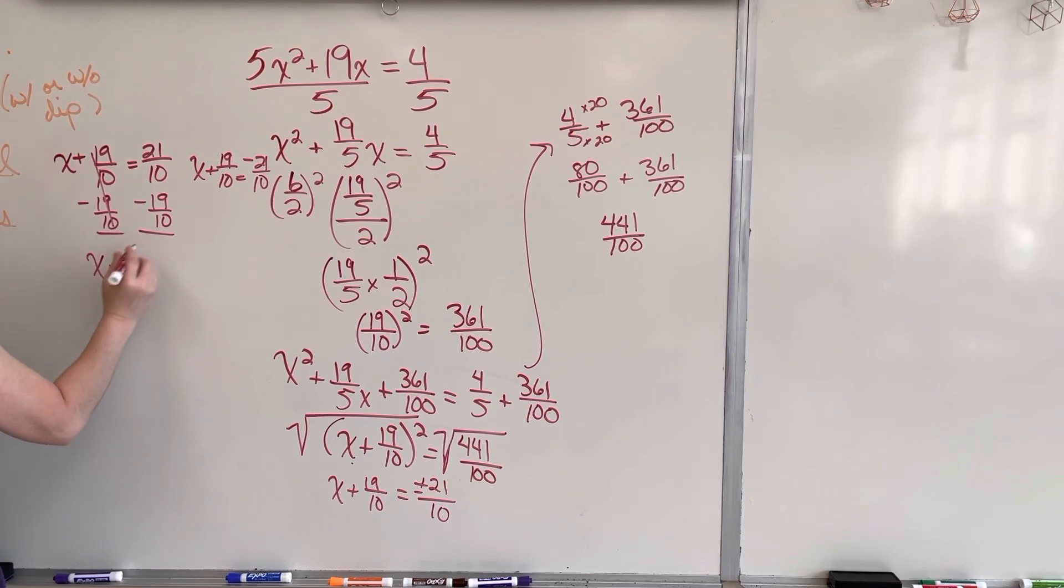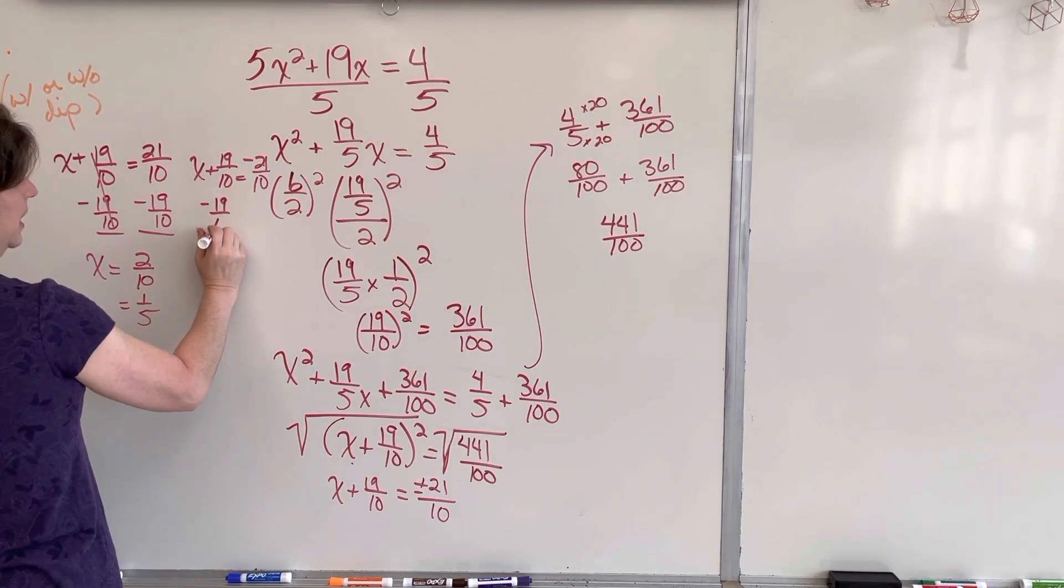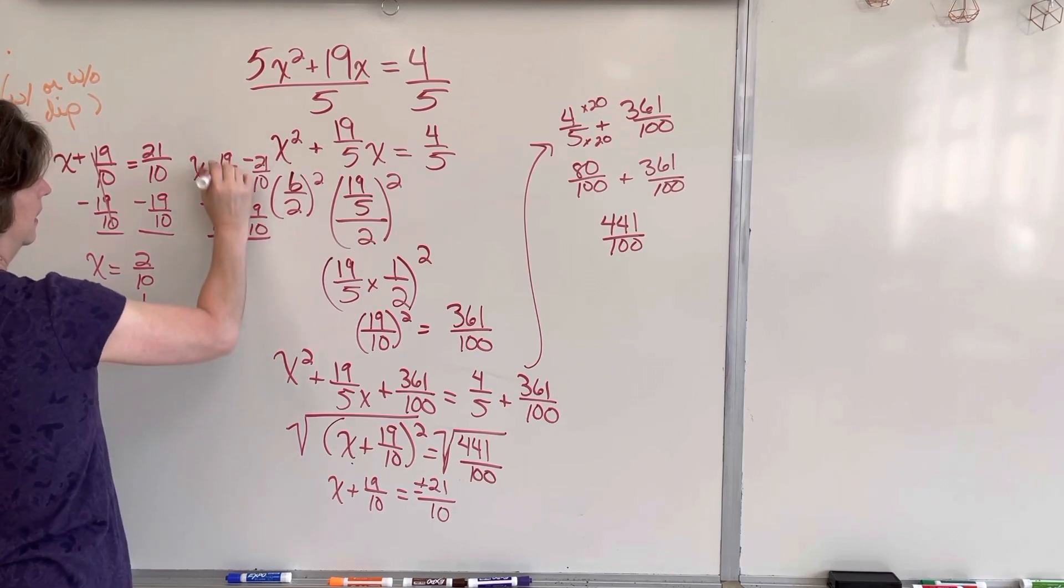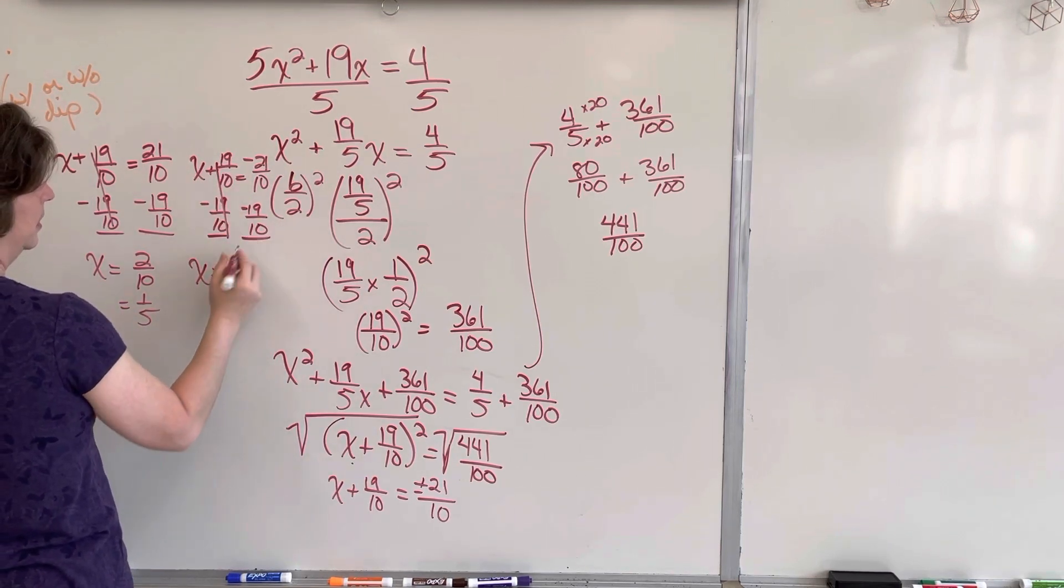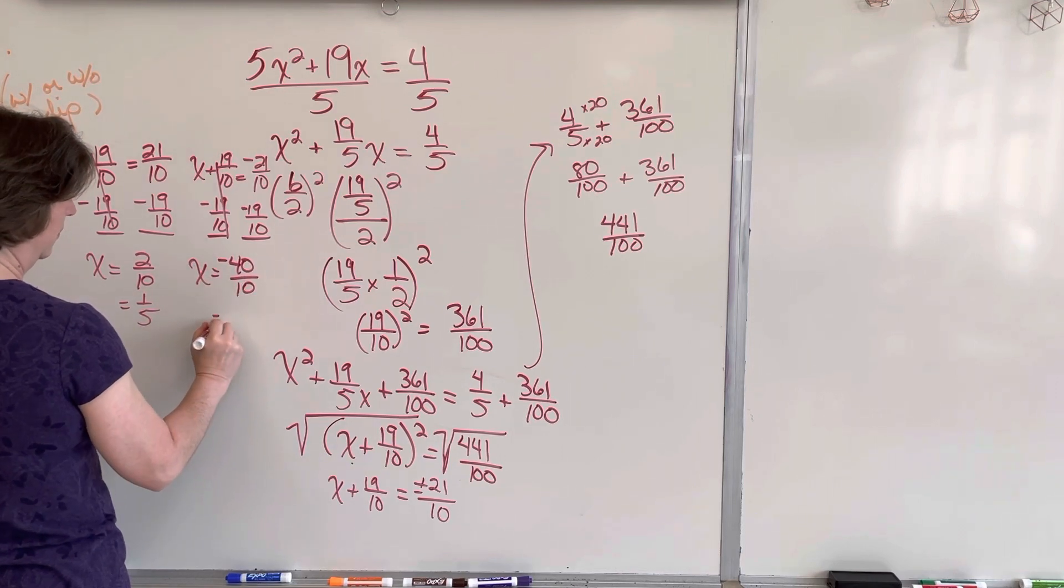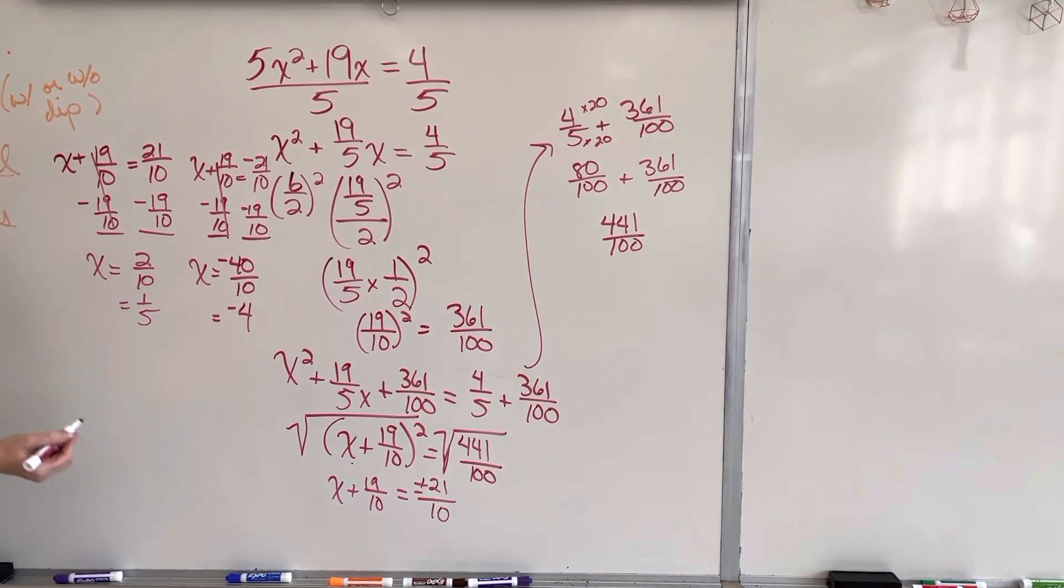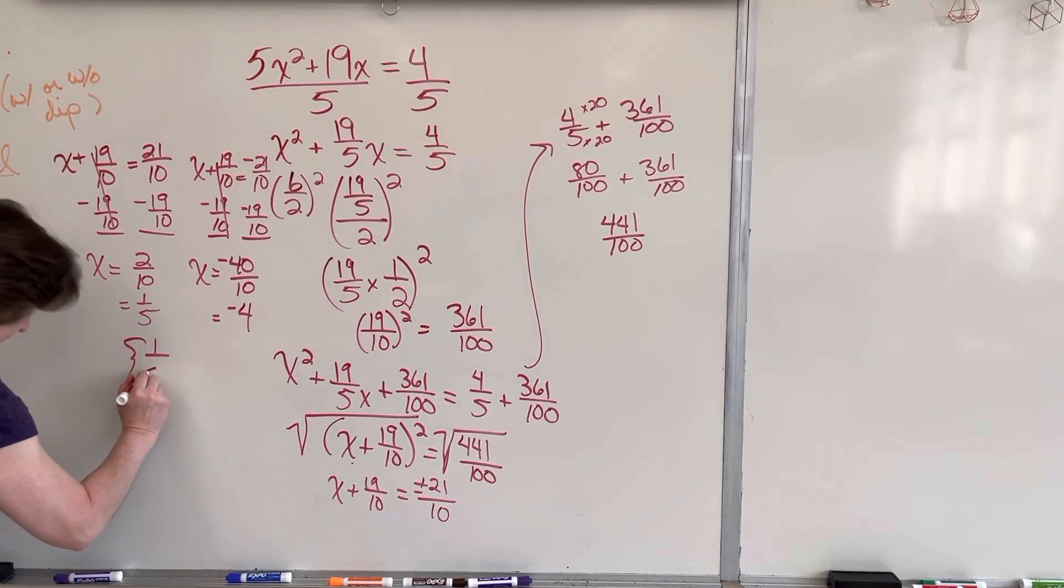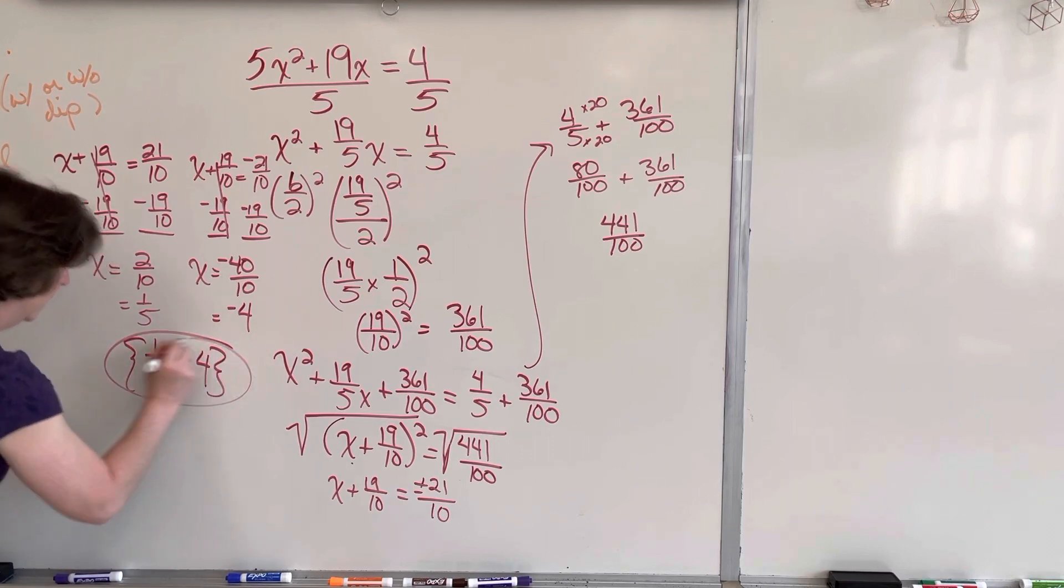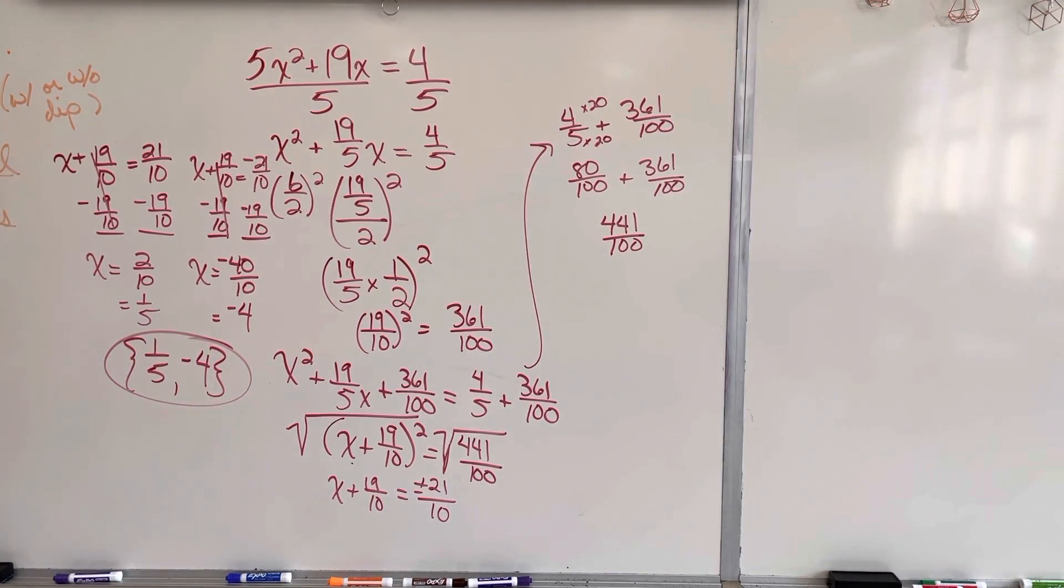x equals 2 over 10 or 1 fifth. I'm going to subtract 19 over 10. Subtract 19 over 10. x equals negative 40 over 10, which equals negative 4. So my two answers for this problem are 1 fifth and negative 4. I'm going to challenge you.